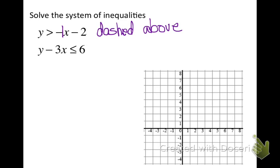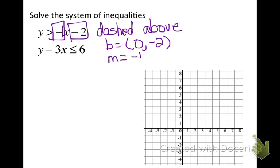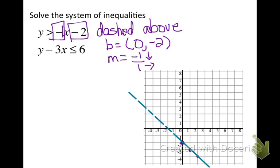My y-intercept, or starting point, is (0, -2), and my slope is -1, which means go down 1 and to the right 1. On my graph, I make a point at -2, then go down 1 and right 1 to draw the line. Since we said it has to be a dashed line, I erase to make it dashed. We also said we shade above the line, so I shade above.